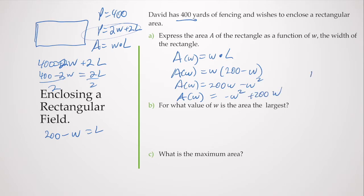This is a parabola. Its graph is a parabola that's concave down, so its vertex is going to be the maximum. If we want to find for what value of W is area the largest, we need to find our vertex. So H equals negative B over 2A. Negative B in this case is negative 200 over 2 times negative 1. That's going to be 100.